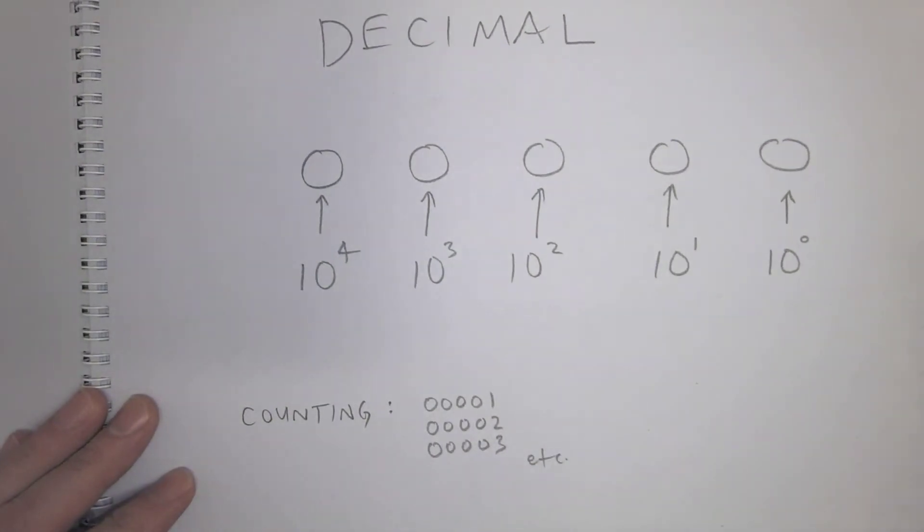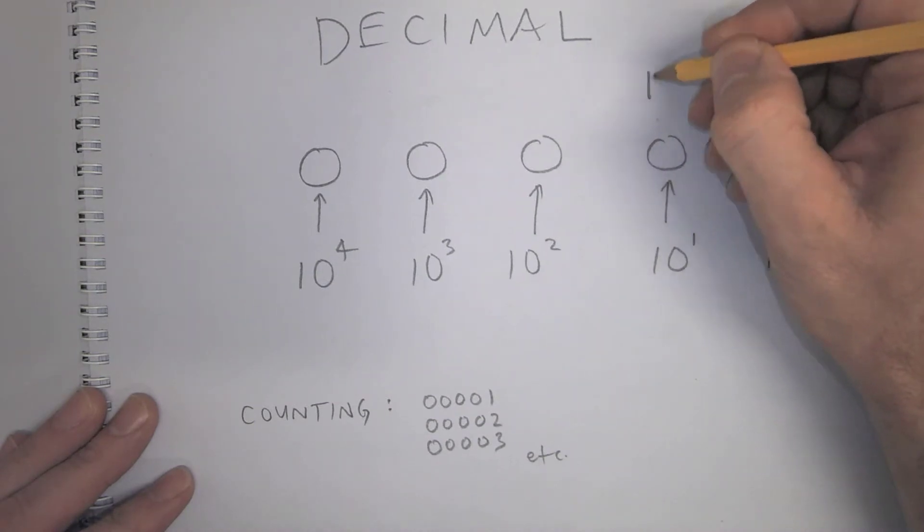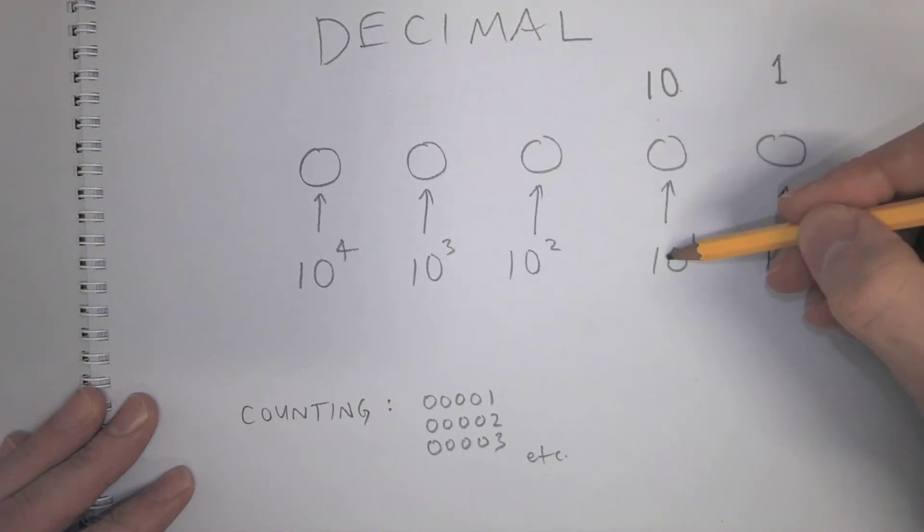And then if you think about it in terms of powers of 10, this one, we call it the ones, right? So 1, 1 happens to be 10 raised to the power of 0. And this next one is 10, and that's 10 to the power of 1.